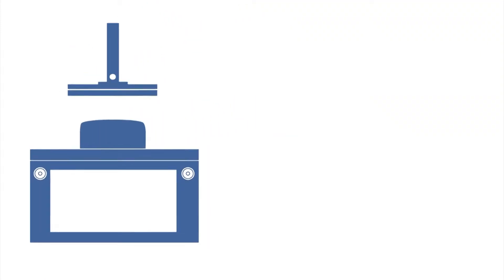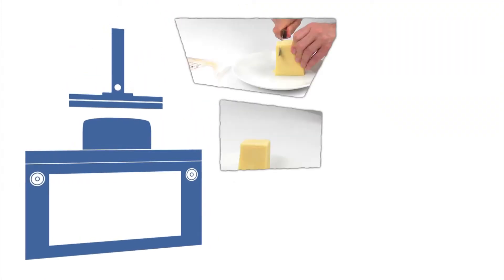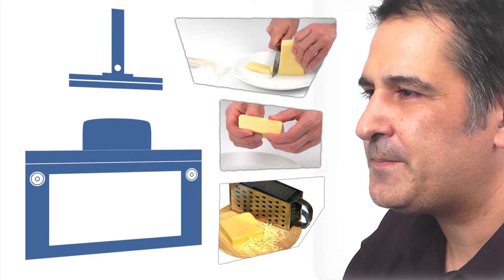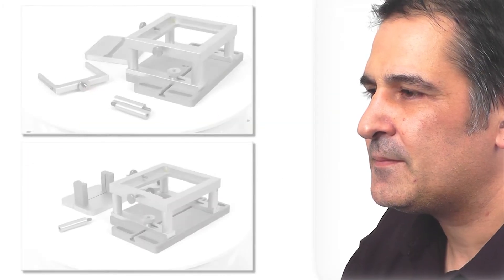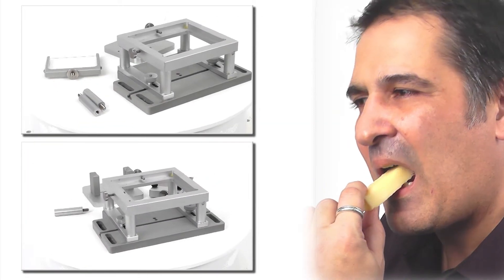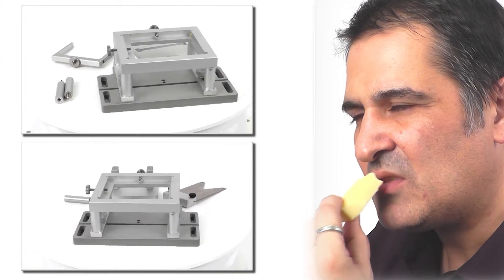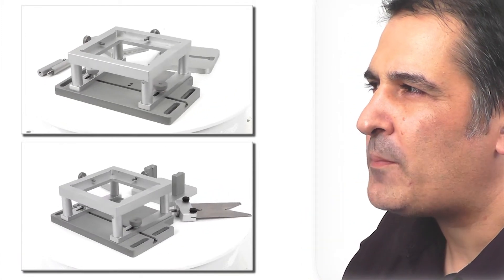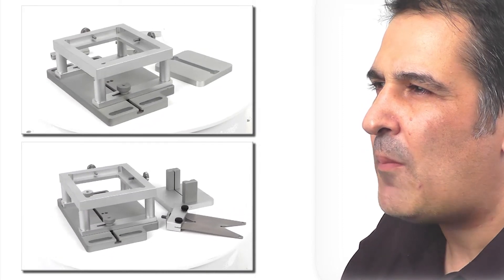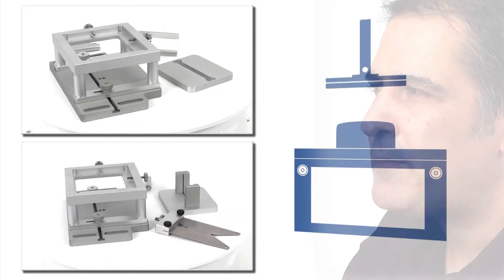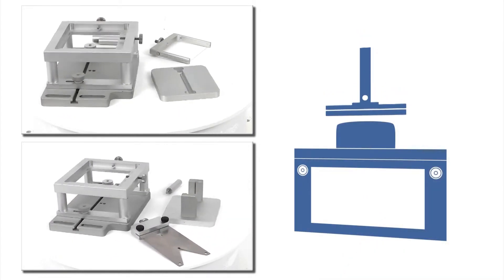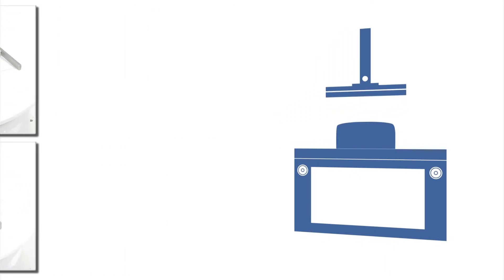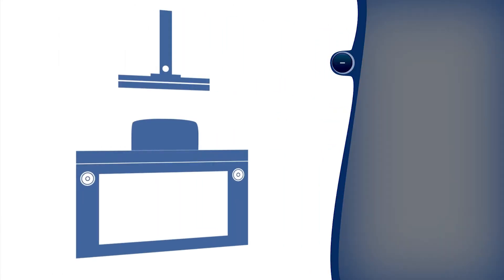Any or all of the ways in which a consumer interacts with a solid cheese may be simulated with a test method. Squeezing, slicing, biting, chewing or grating can be represented by compression, penetration or several shear techniques using blades or a wire. The producer is able to simulate and correlate to whichever scenarios best represent their preferred established quality tests.